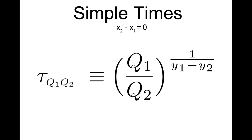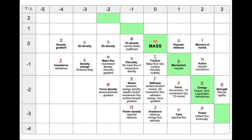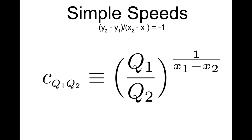A duration tau can be the result of two opposing mechanical factors. In the last episode, we considered quantities on the same diagonal of slope minus 1, like these ones. We saw that ratios of such quantities produce speeds. And because of the particular relationship between the space and time exponents for the opposing quantities q1 and q2, we saw that this formula could be written by using the space exponents x1 and x2, or the time exponents y1 and y2.